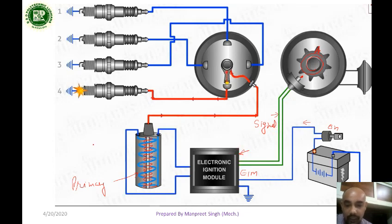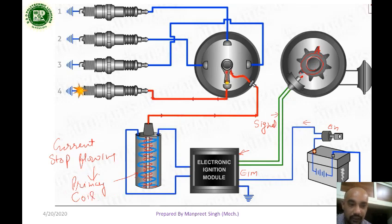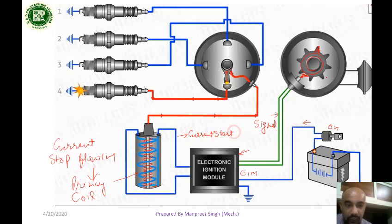When the signal is sent, you can stop the current flowing from the primary coil. When the teeth are not picked up, then the current flow starts again. When the teeth are picked up again, the current is stopped.